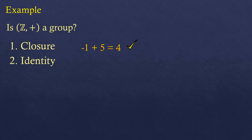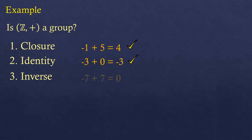For identity: there is an identity element for integers under addition, which is zero — any number plus zero equals itself, so identity is satisfied. For inverse: any integer added to its opposite gives zero; for example, negative seven plus positive seven equals zero, and that opposite is also an integer, so inverse is satisfied.